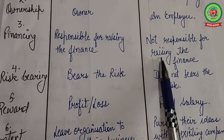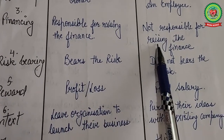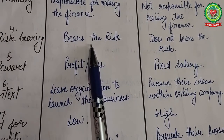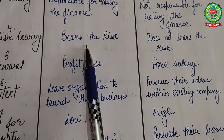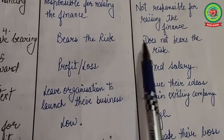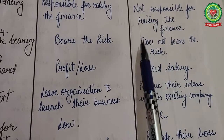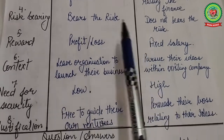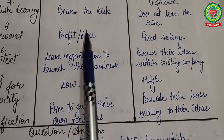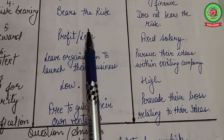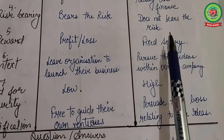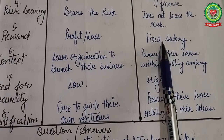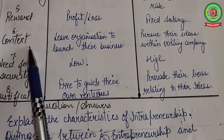Fourth, risk bearing — an entrepreneur bears the risk of business failures, whereas an intrapreneur does not bear the risk of business failure. Fifth, reward — profit or loss is the reward for an entrepreneur, whereas a fixed salary is the reward for an intrapreneur. Next is context.